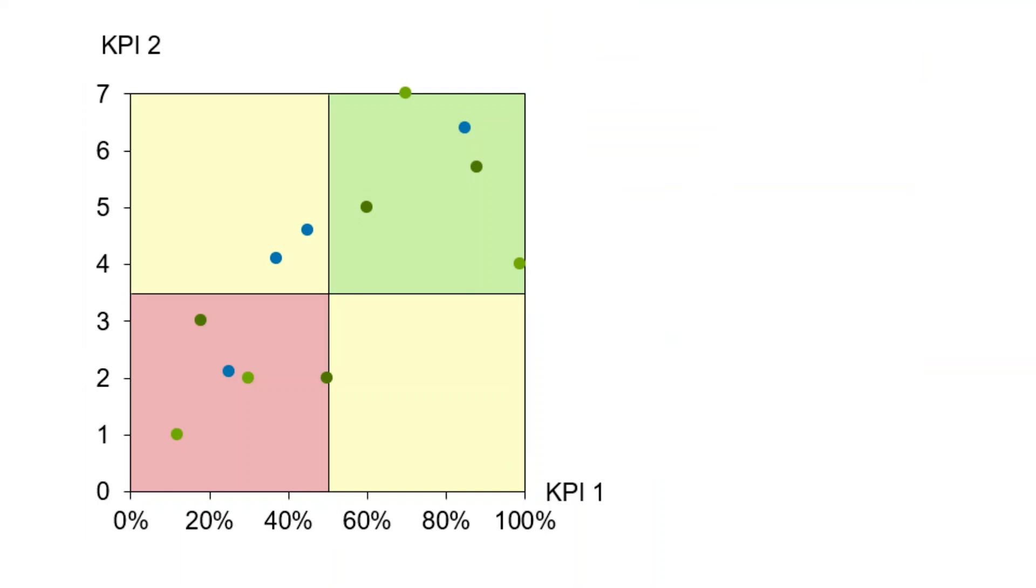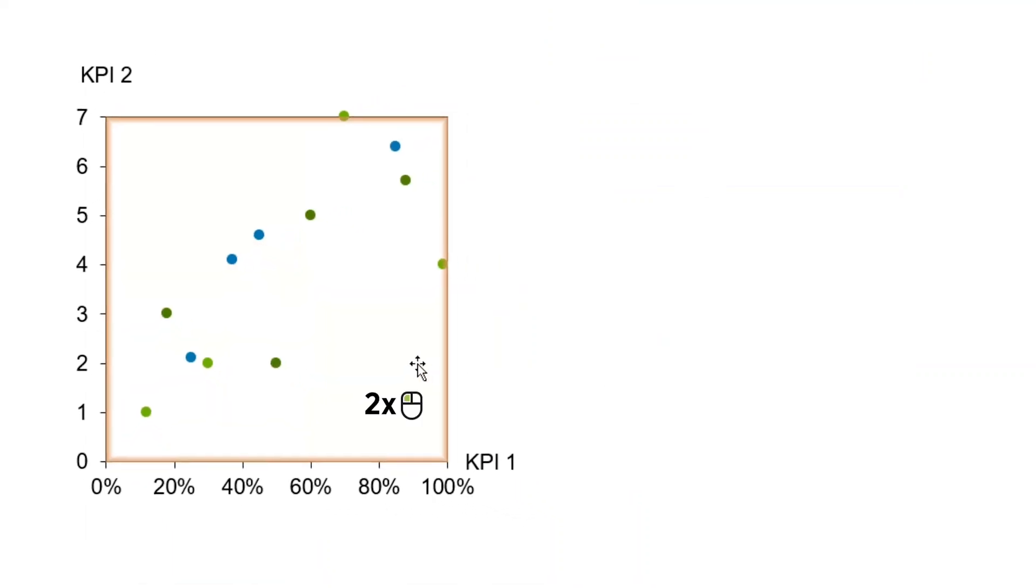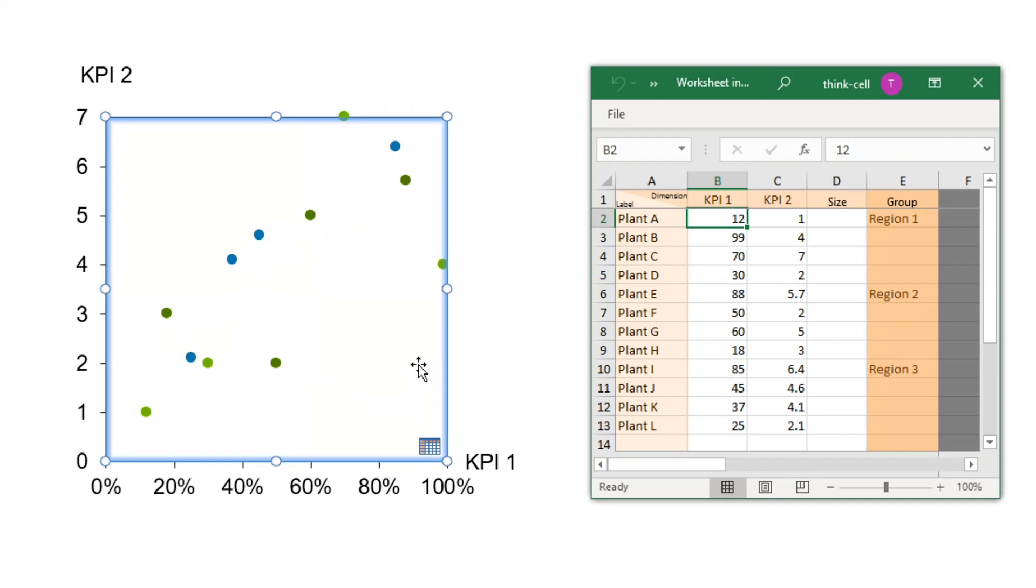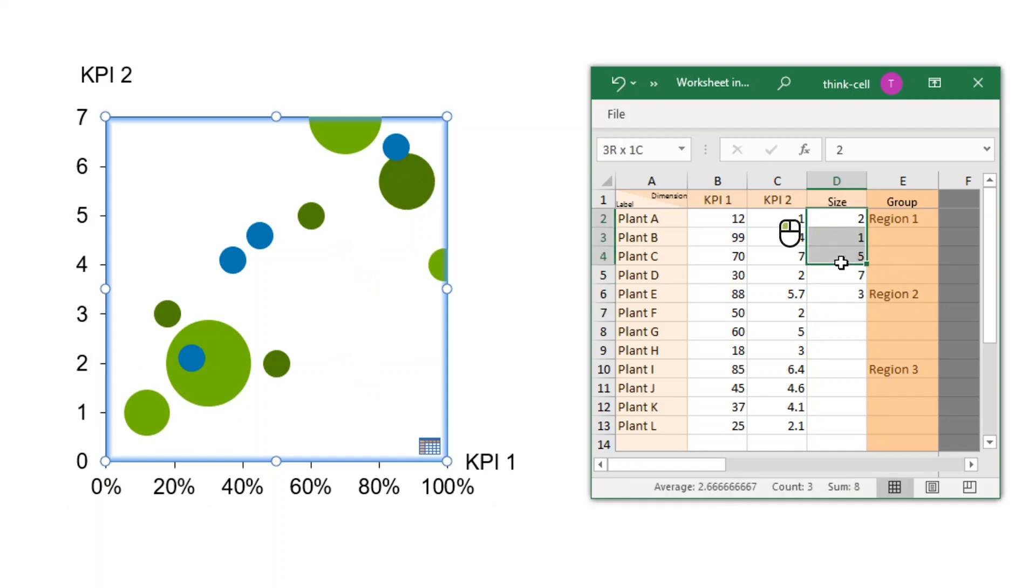Now your scatter chart is complete. Double-click on the chart to open the internal datasheet. As you may have noticed already, column D is headlined Size by default. Adding values to this column will turn your scatter into a bubble chart. Vice versa, deleting all values from the Size column will turn your bubble into a scatter chart.